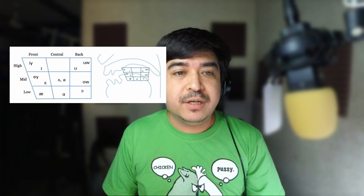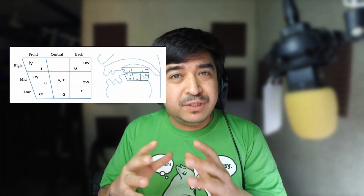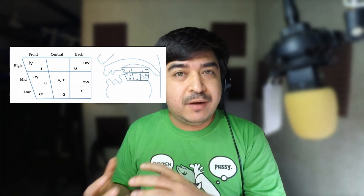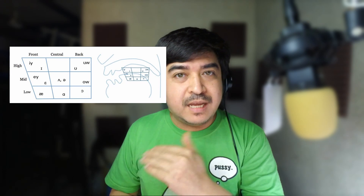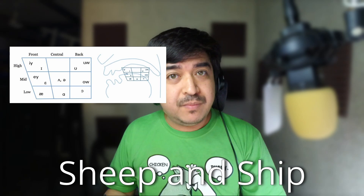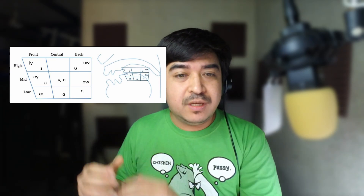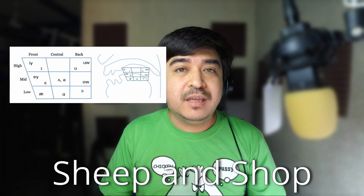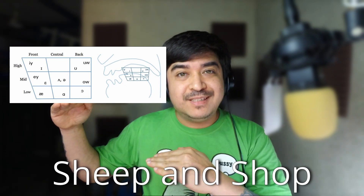Looking at the chart, we can see there are similarities in the position of our tongue. For example, the words 'sheep' and 'ship' are almost close together in position but not exactly the same. Unlike 'sheep' and 'shop' where the difference in positioning is much larger.